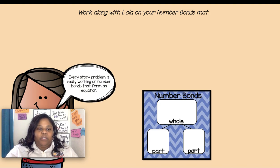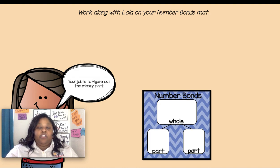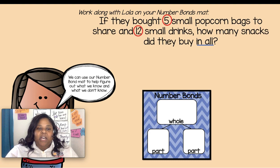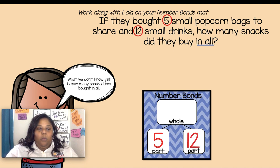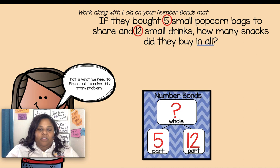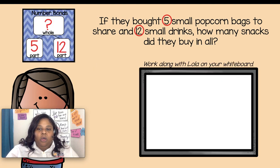Every story problem is really working on number bonds that form an equation. The story problem will tell you two of the numbers in the number bond. Your job is to figure out the missing part. We can use our number bond mat to help us figure out what we need to know and what we don't know. We know they bought five bags of popcorn — that was one part of the snacks. We also know that they bought 12 drinks — that was the other part. What we don't know yet is how many snacks they bought in all. That is what we need to figure out.